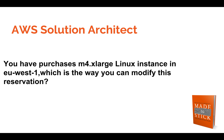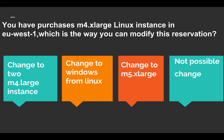Today's question: if you have purchased an M4 x-large Linux instance in eu-west-1, which is the way you can modify this reservation? The options are: (1) change to two M4 large instances, (2) change from Linux to Windows (OS change), (3) change to M5 x-large, and (4) there is no possibility of change.